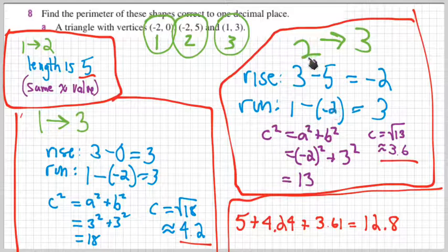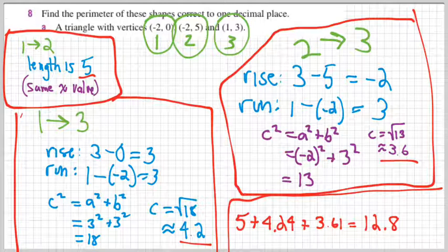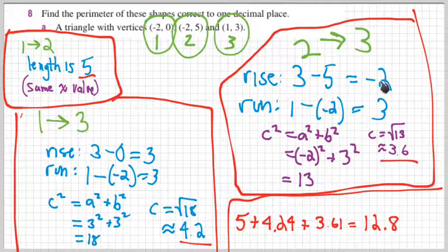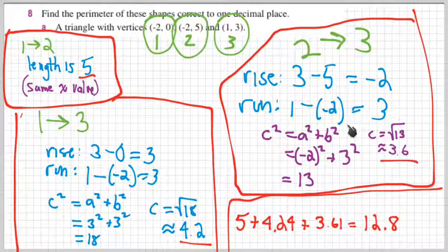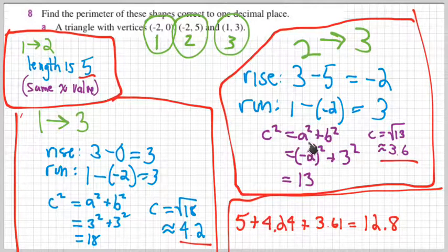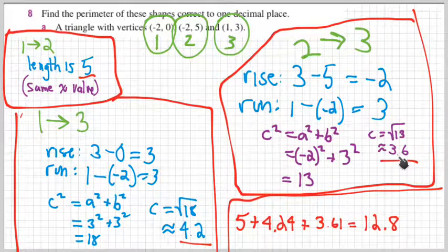Same thing from points 2 to 3, with those coordinates. So 3 minus 5, and 1 minus negative 2. Now you could do 5 minus 3, and negative 2 minus 1 if you want. You'll get the same outcome in the end. But here we get 3 minus 5 is negative 2, 1 minus negative 2 is 3. And so we plug those into Pythagoras' Theorem just like we did before. So negative 2 squared is 4, 3 squared is 9, so 9 plus 4 is 13. The square root of 13 is about 3.6.